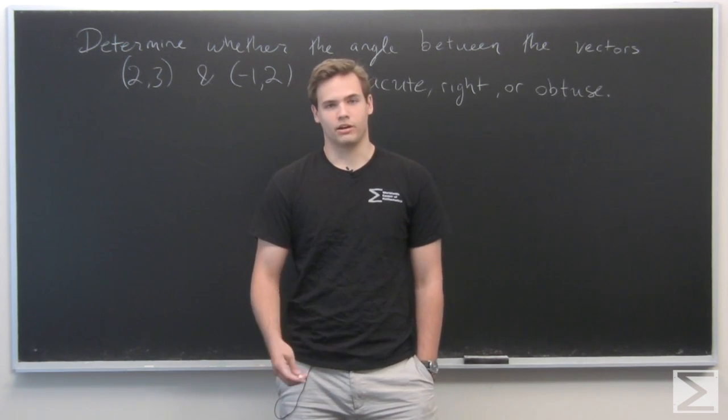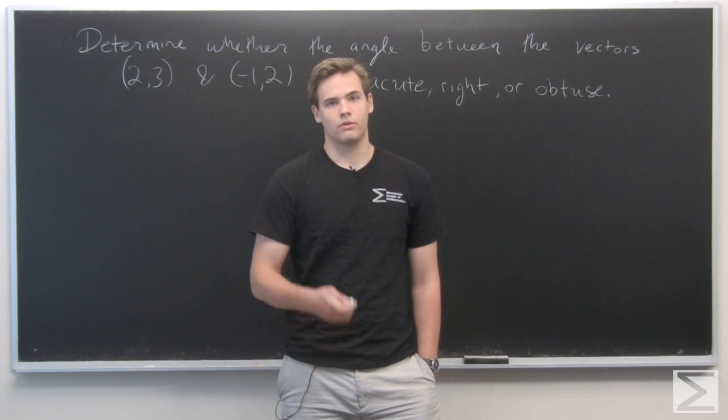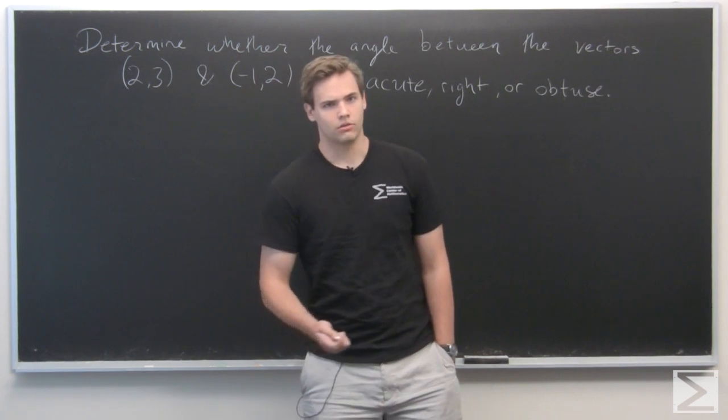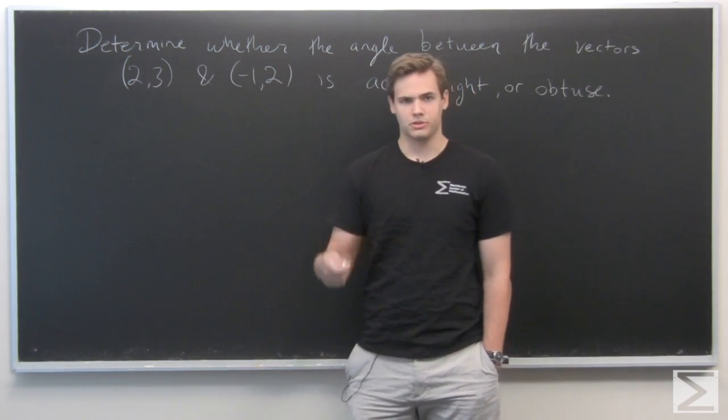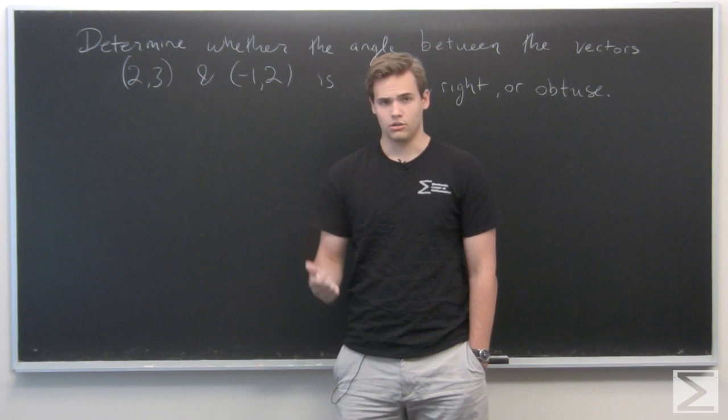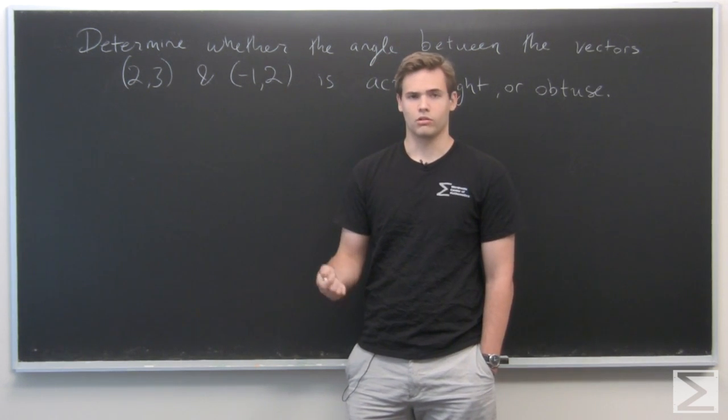So now that the dot product has been introduced for vectors, we've seen that we can use this to calculate the angle between two vectors. And right now, before we start doing explicit angles, we want to calculate whether or not the angle between two vectors is acute, right angle, or obtuse.